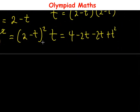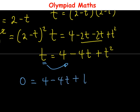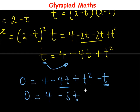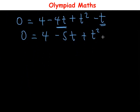So t = 4 − 4t + t². Moving this t to the right side: 0 = 4 − 4t + t² − t, which gives 0 = 4 − 5t + t². Rearranging so that t² comes first: t² − 5t + 4 = 0.